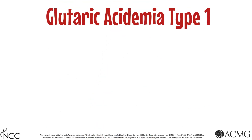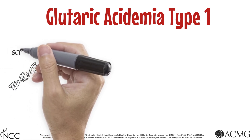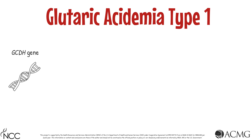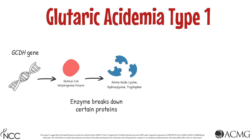Glutaric Acidemia Type 1 is caused by pathogenic variants in the GCDH gene. This gene gives instructions for making glutaryl-CoA dehydrogenase, an enzyme that helps break down certain proteins, particularly those that contain the amino acids lysine, hydroxylysine, and tryptophan. A functioning glutaryl-CoA dehydrogenase enzyme allows the body to either use or remove these proteins.